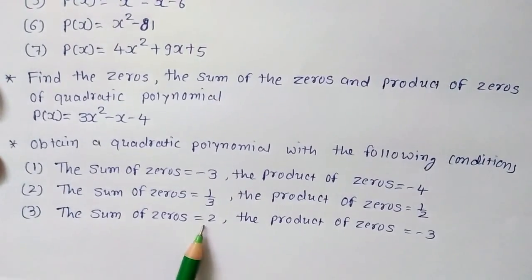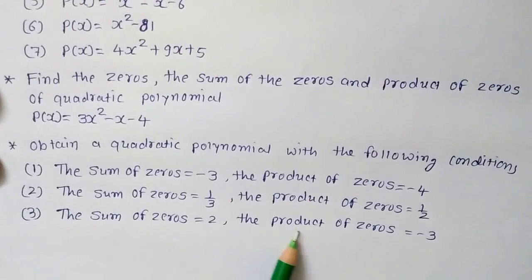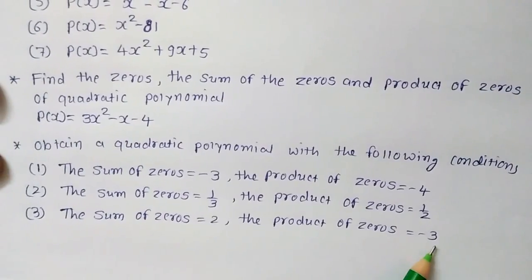Third one, the sum of the zeros is equal to 2 and the product of the zeros is equal to minus 3.